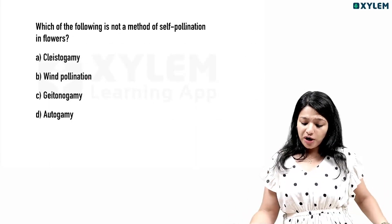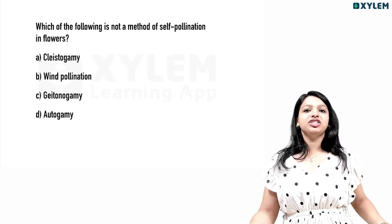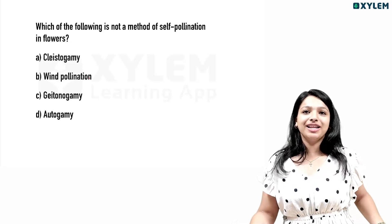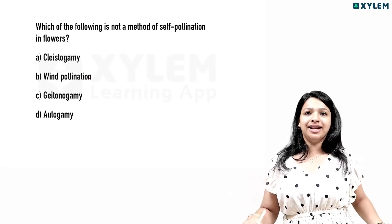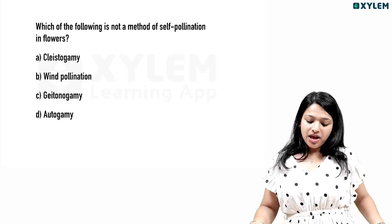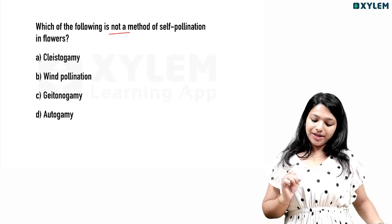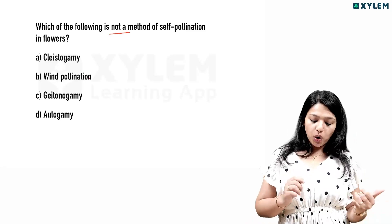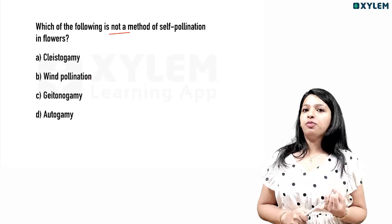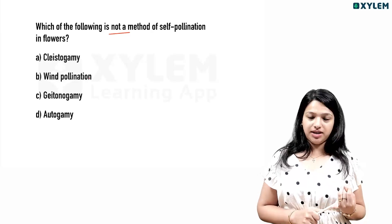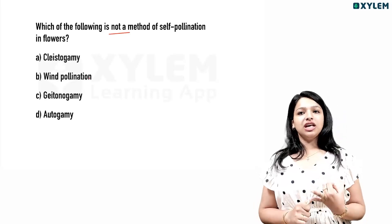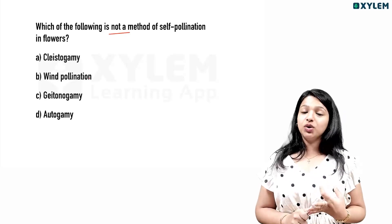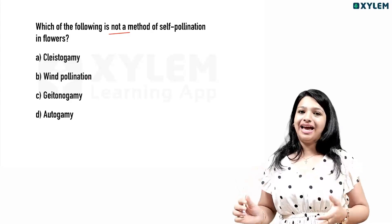Which of the following is not a method of self-pollination in flowers? Self-pollination methods include autogamy — autogamy is a method of self-pollination. Cleistogamy is a method of self-pollination. Geitonogamy involves the same plant.